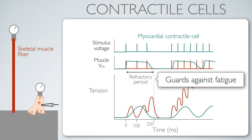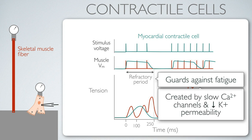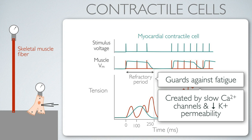Even if the auto-rhythmic cells somehow fed a super-high train of action potentials — which they shouldn't because they have their own refractory period — the contractile cells are resistant to those extra excitations. A high frequency of action potentials cannot result in contraction because of the refractory period. The refractory period guards against fatigue. This is generated again by calcium channels and low potassium permeability — essentially a depolarization driven by calcium and depressed potassium permeability. Both the auto-rhythmic and contractile cells have these measures to help avoid exhaustion.